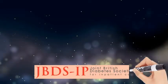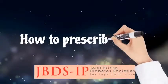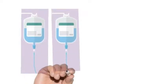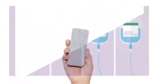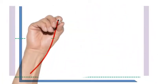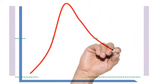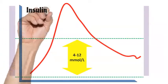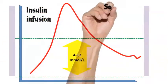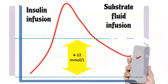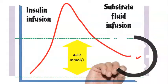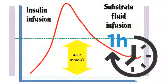We are discussing the Joint British Diabetes Society guidelines on how to prescribe variable rate IV insulin. This involves multiple infusions of insulin as well as substrate fluid running side by side. If you have a patient admitted in hospital whose glucose needs to be controlled rapidly and they are not eating and drinking, you can run an insulin infusion as well as a substrate fluid infusion side by side, and start checking their blood glucose on an hourly basis.